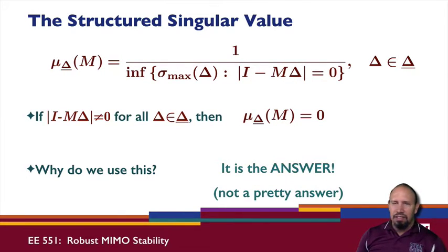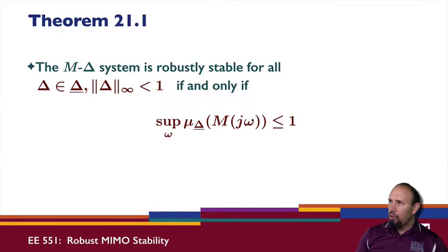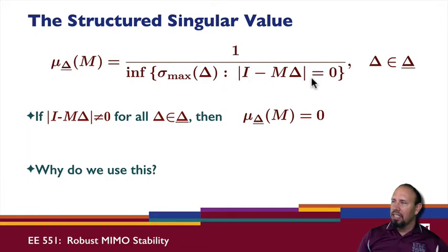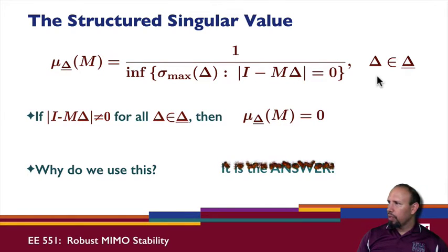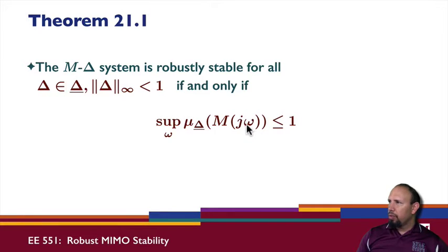Why do we go through all this trouble? It's not a pretty answer, but it is the answer. We have this result: the M delta system is robustly stable for all delta in the uncertainty set if and only if the supremum over all omega of the structured singular value of M at jω is less than or equal to one. We're evaluating M at the frequencies omega, and then we need to check for the supremum over all omega. This is the overall answer to our robust stability and disturbance rejection problem.